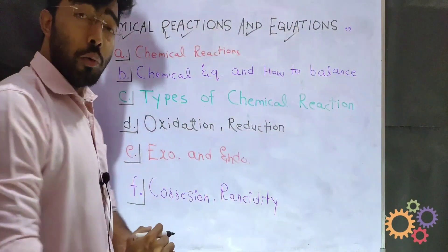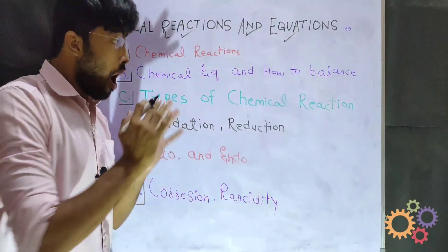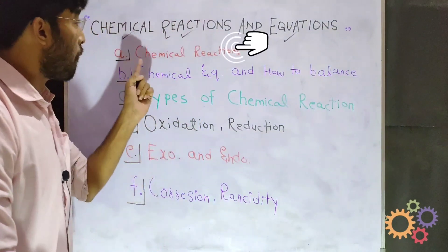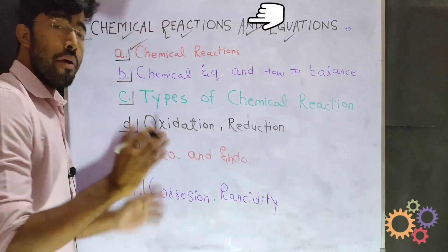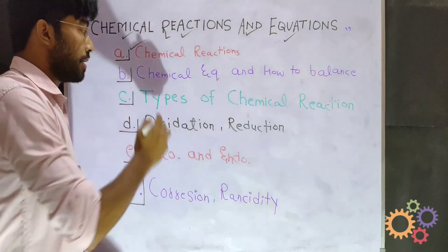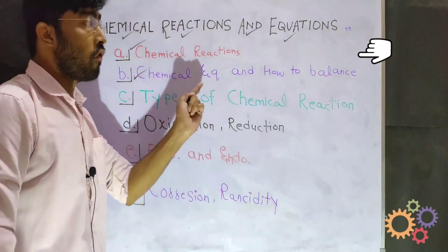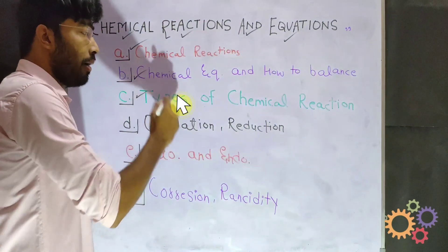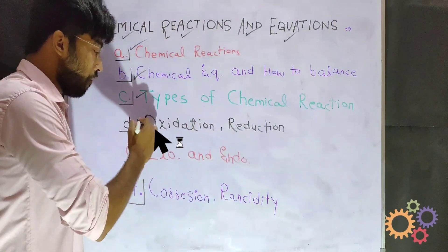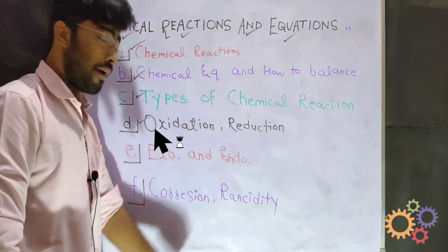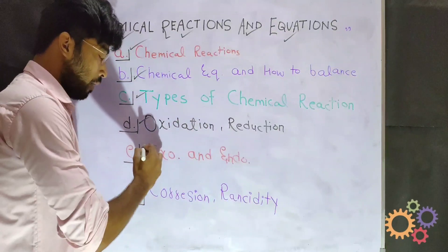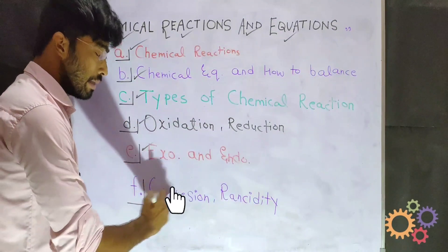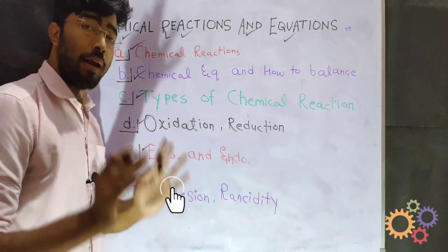So firstly, I want to say all the important headings in this chapter. First: Chemical Reactions. Second: Chemical Equation and How to Balance. Third: Types of Chemical Reaction. Fourth: Oxidation and Reduction. Fifth: Exothermic and Endothermic. And sixth: Corrosion and Rancidity.